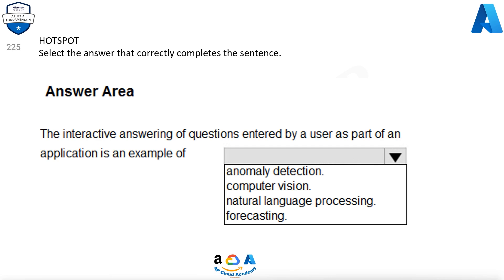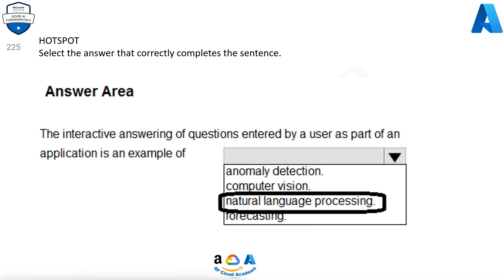Select the answer that correctly completes the sentence. The interactive answering of questions entered by a user as part of an application is an example of: anomaly detection, computer vision, natural language processing, or forecasting. The correct option is natural language processing.